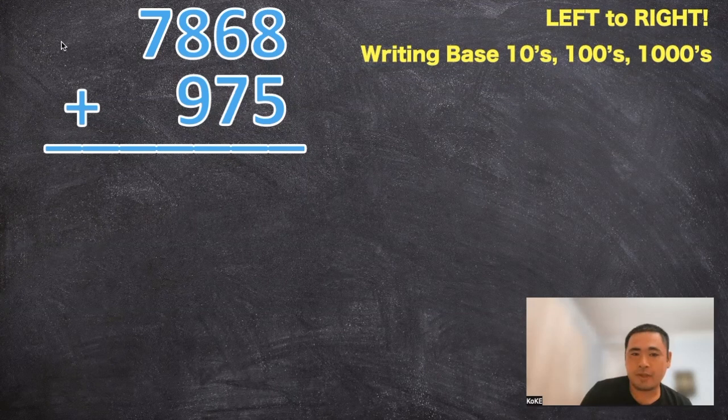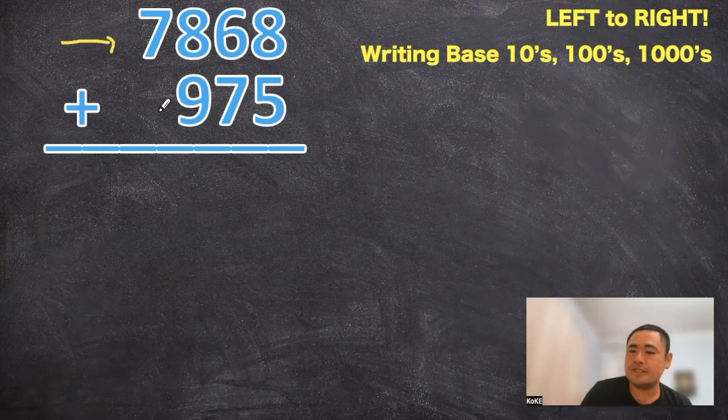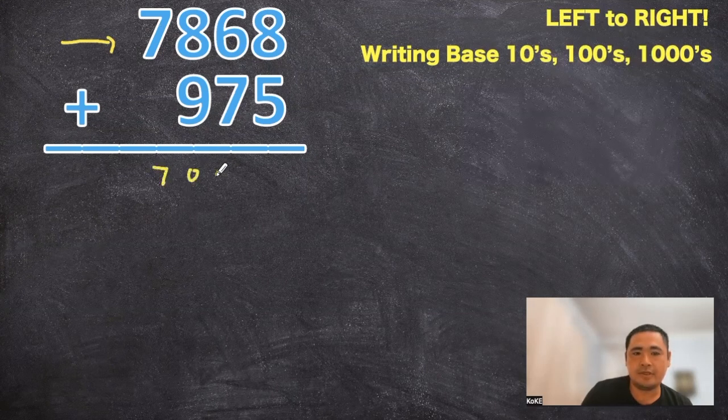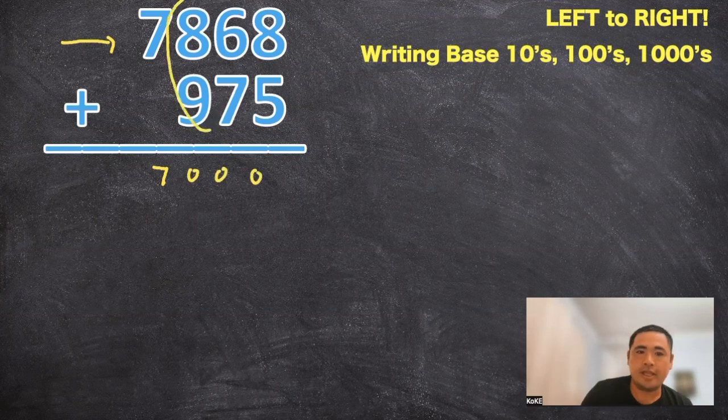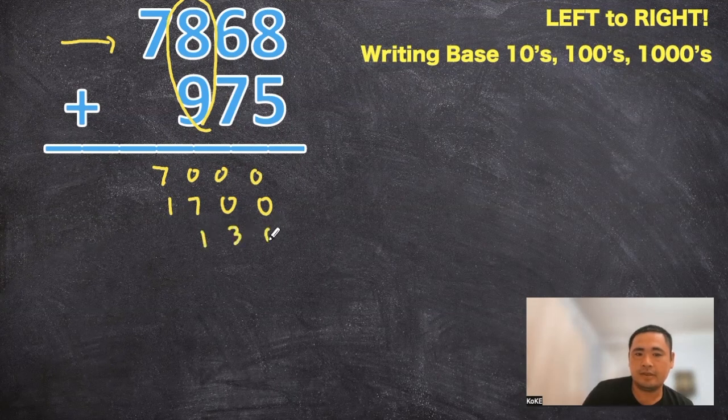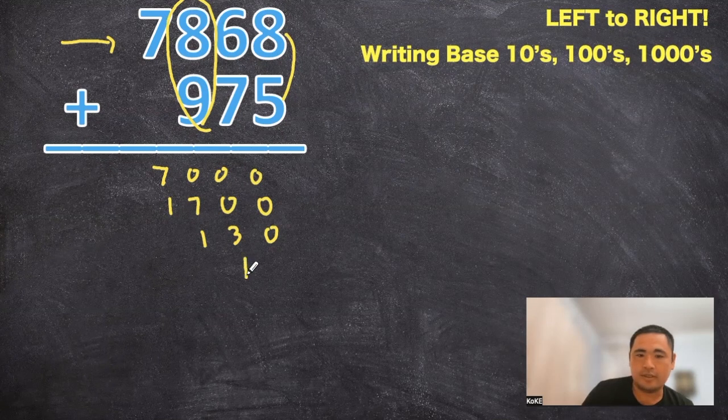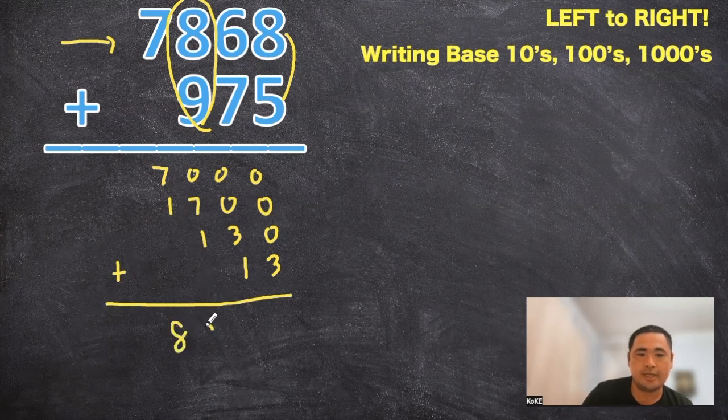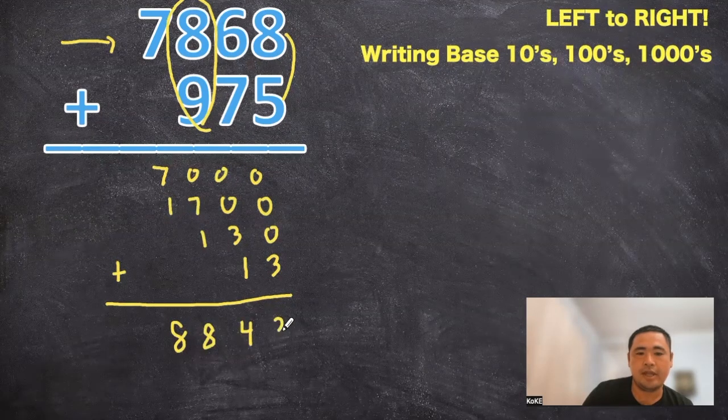So with addition we're going to start from the left and say that seven thousands plus zero thousands equals seven thousands. And next we're going to look at the eight and the nine. So eight hundreds plus nine hundreds equals seventeen hundreds. And the six and the seven. Six tens plus seven tens equals thirteen tens. And finally the eight and the five equals thirteen ones. And what's really cool about this is that if you notice there is no carryover. So we can actually add from the left to the right as well and say that our answer is eight thousand eight hundred and forty three.